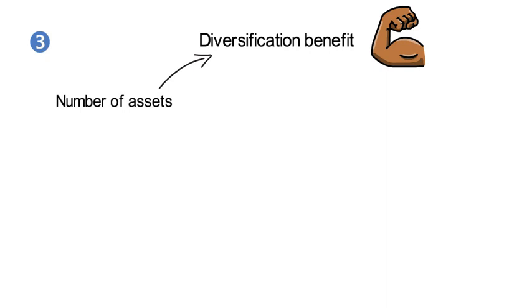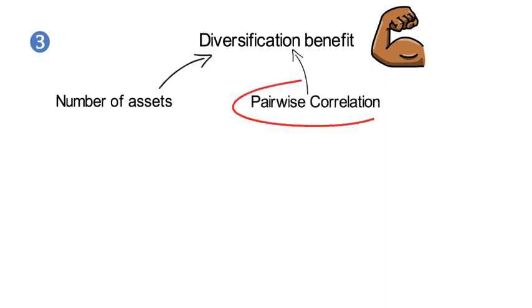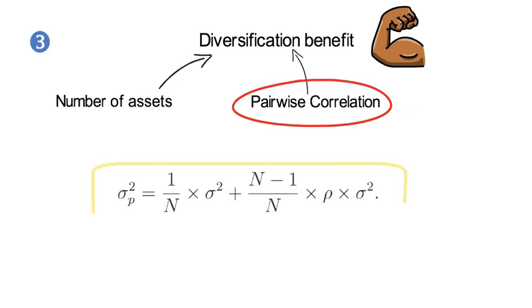The third takeaway: the strength of the diversification benefit depends on the number of assets in the portfolio, but more importantly it depends on the pairwise correlation. Assume all assets of the equal weight portfolio share the same volatility sigma and the same pairwise correlation coefficient rho. The variance of the portfolio's holding period return would therefore coincide with the following expression: sigma squared P equals sigma squared divided by N plus N minus 1 over N times rho times sigma squared.